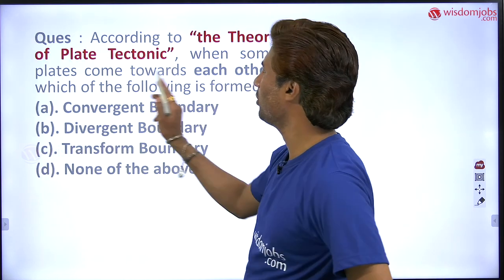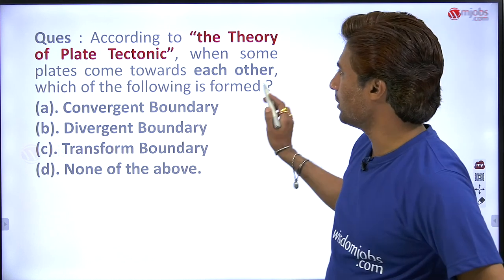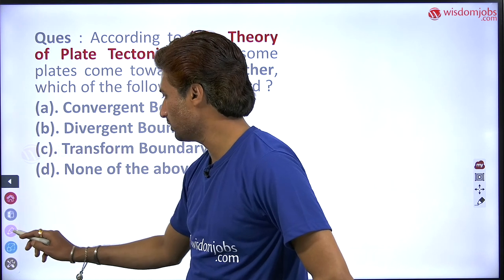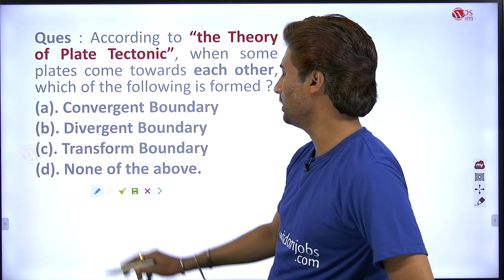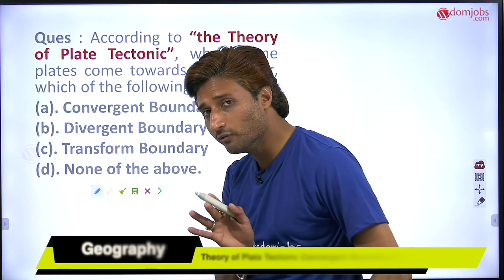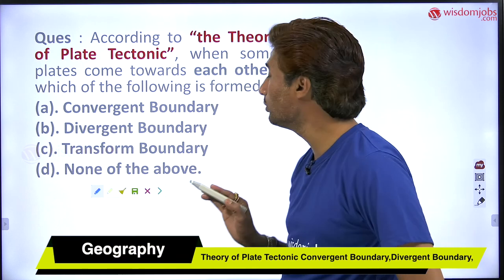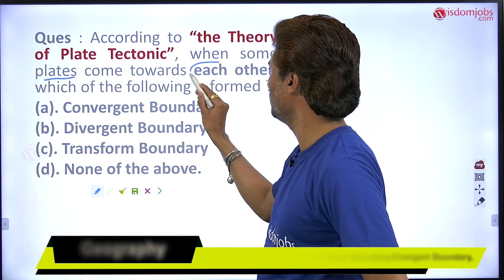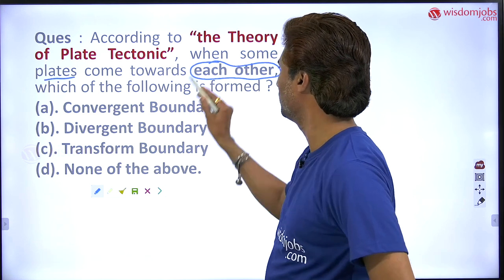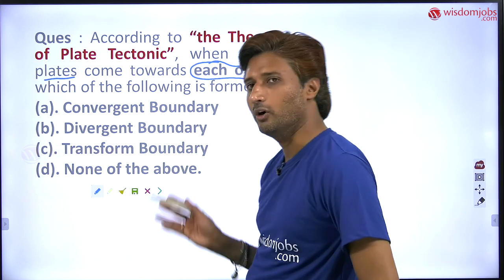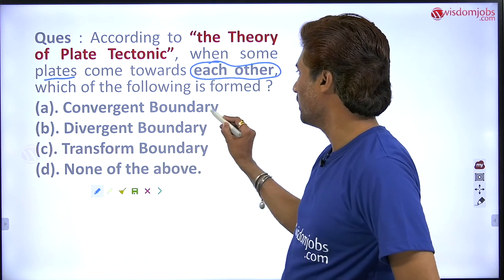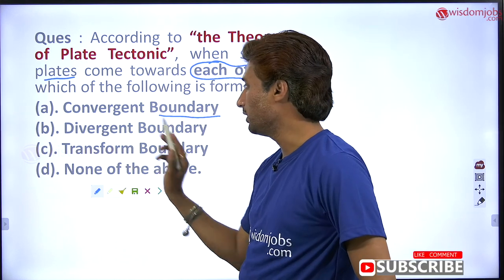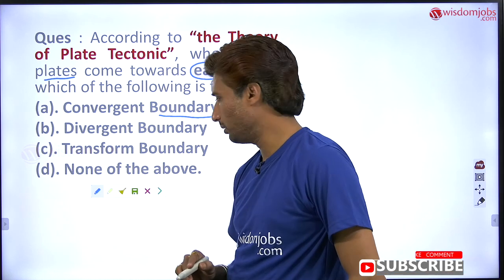According to the theory of plate tectonics, when some plates come towards each other, which of the following is formed? Is it a convergent boundary, a divergent boundary, a transform boundary, or none of the above?